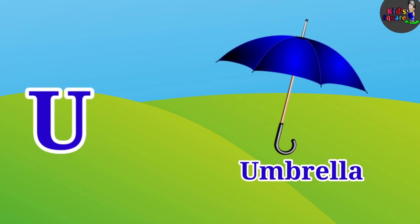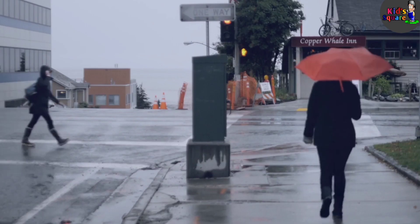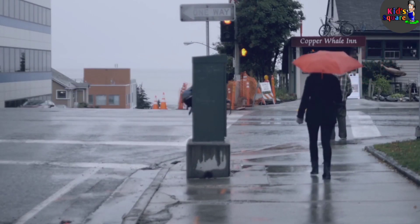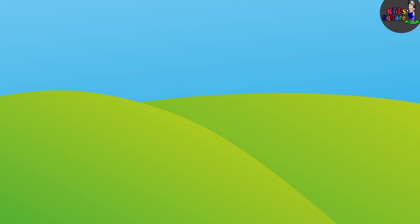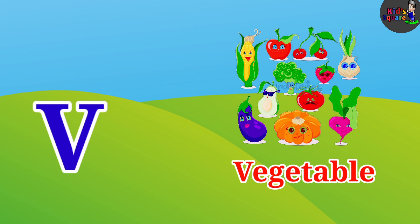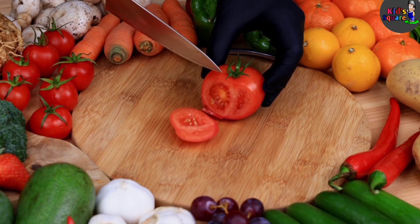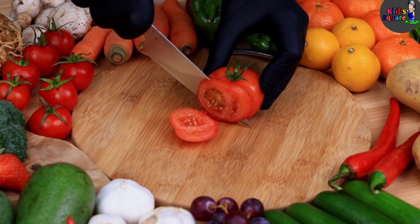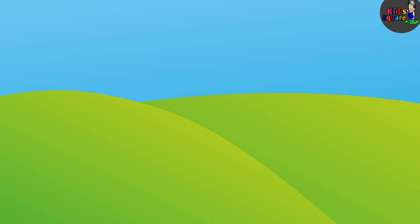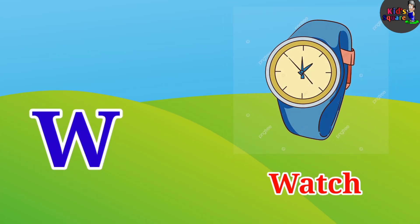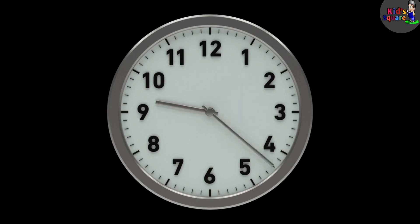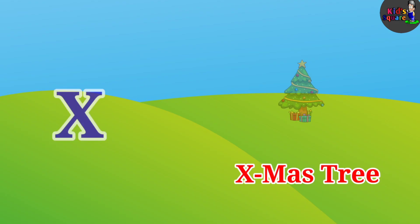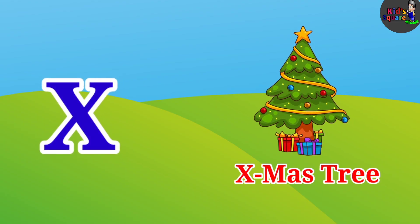U for Umbrella. V for Vegetable. X for X-mas Tree.